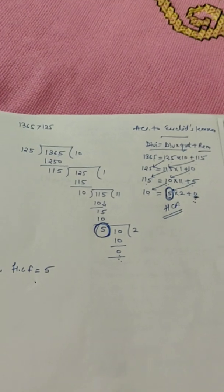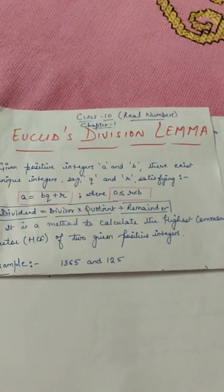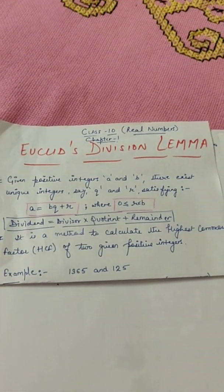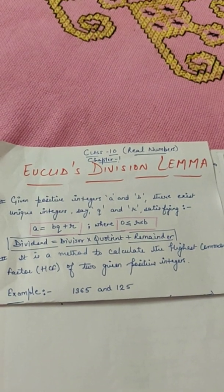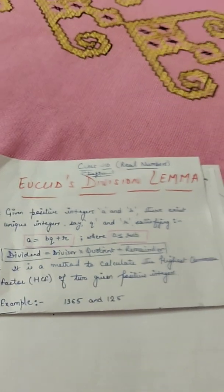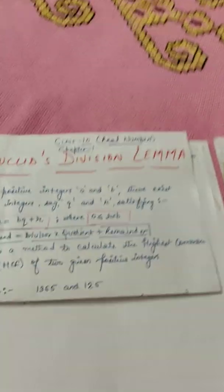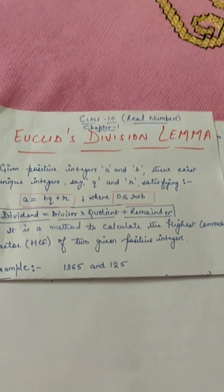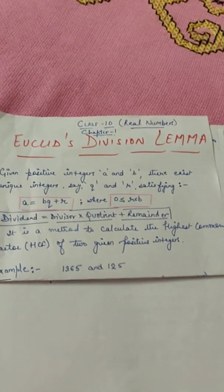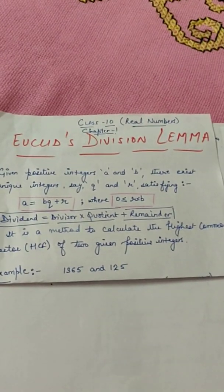So this is all about division lemma, Euclid division lemma, that is just a method to calculate the highest common factor. Some more questions will come and discuss in your next video. So keep watching, keep liking and keep subscribing. Thank you.